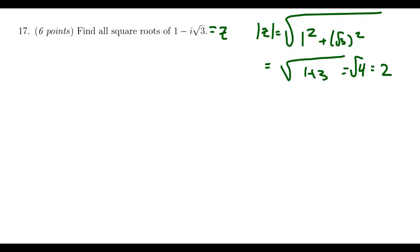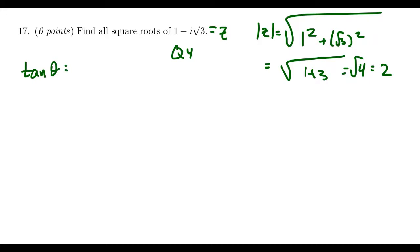The next thing to do is to compute the argument. Notice that the real part is positive and the imaginary part is negative, so our complex number is going to terminate in the fourth quadrant. Thinking about the tangent ratio, tangent of theta equals negative root three over one, which is negative root three. This occurs when you have negative root three over two, over one half.